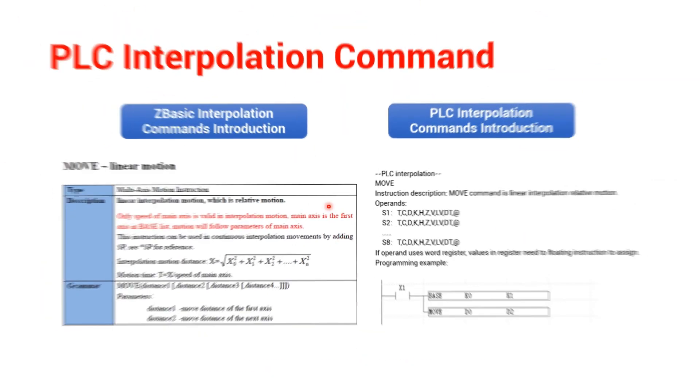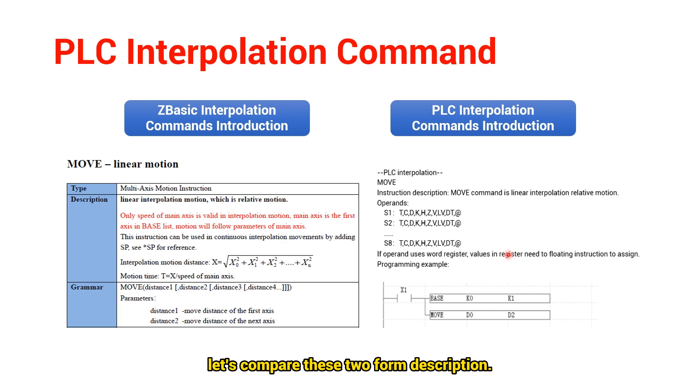For more clearly, let's compare these two form description. First one, basic. It only needs to write distance for each axis here. Then, composed speed and separate speed of each axis, both will be calculated by the system.